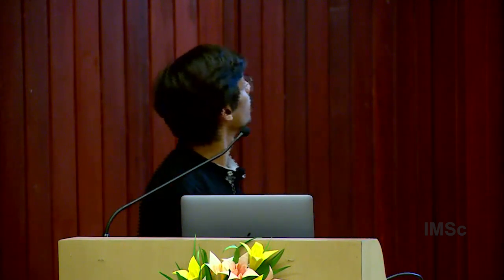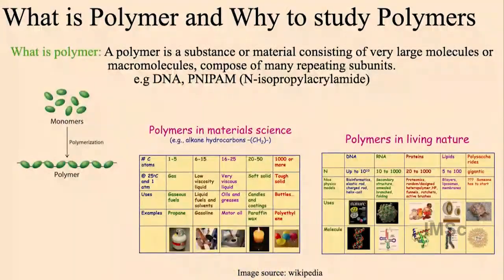So initially, what is a polymer and why study polymers? A polymer is some atom or molecule which repeats itself to form a long chain, which we call either a polymer or macromolecule. We study it because polymer is ubiquitous in nature — present in material science, in living nature, in our body, everywhere. It is really important to study the characteristics of polymers.